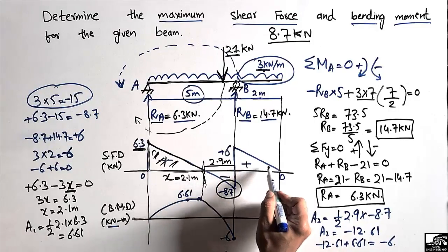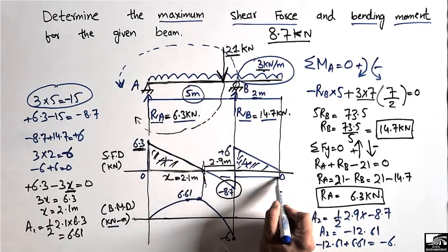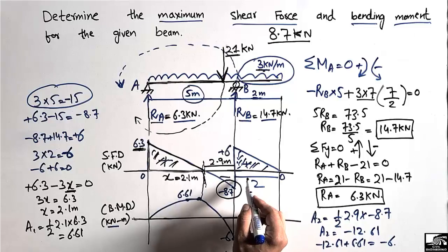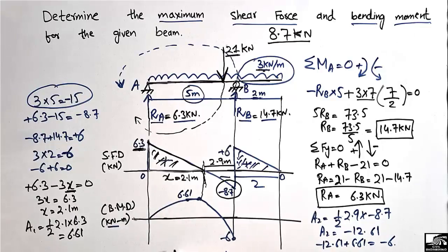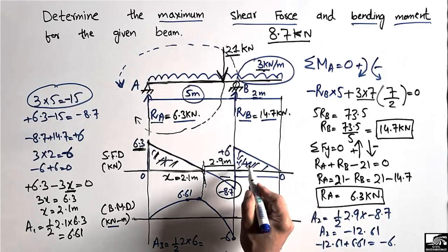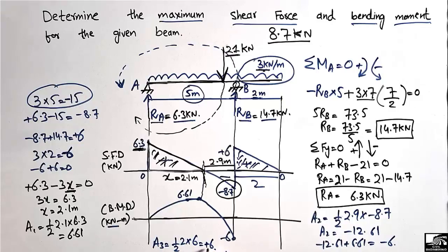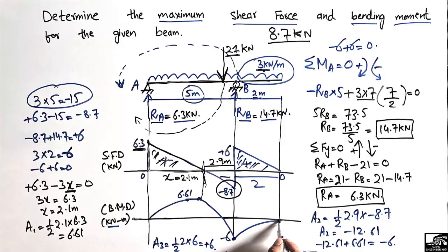For the 2-meter overhang, there is a positive shear box forming a triangle with base 2 meters and height 6 kN. Area A3 = ½ × 2 × 6 = +6 kN·m. Adding to the previous value: −6 + 6 = 0. The bending moment at the free end is zero, which confirms our diagram is correct.